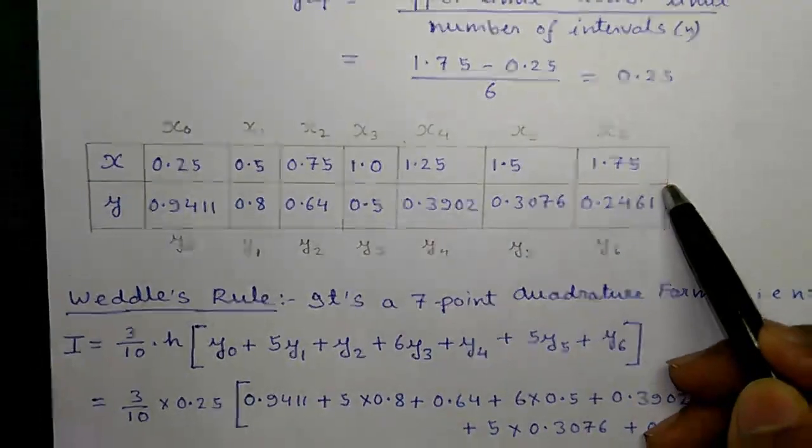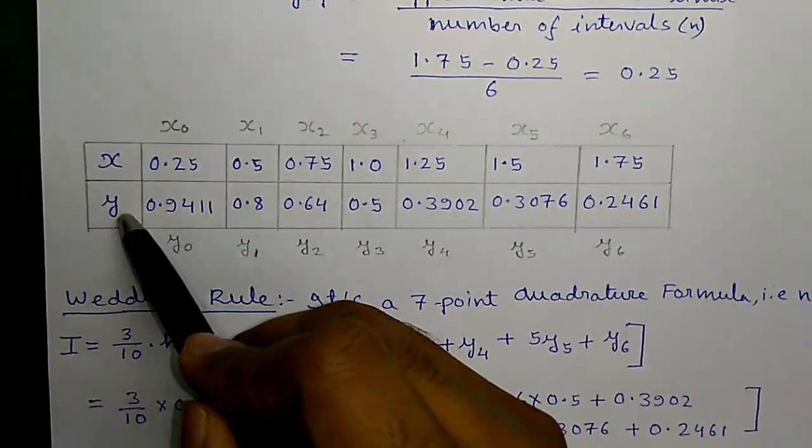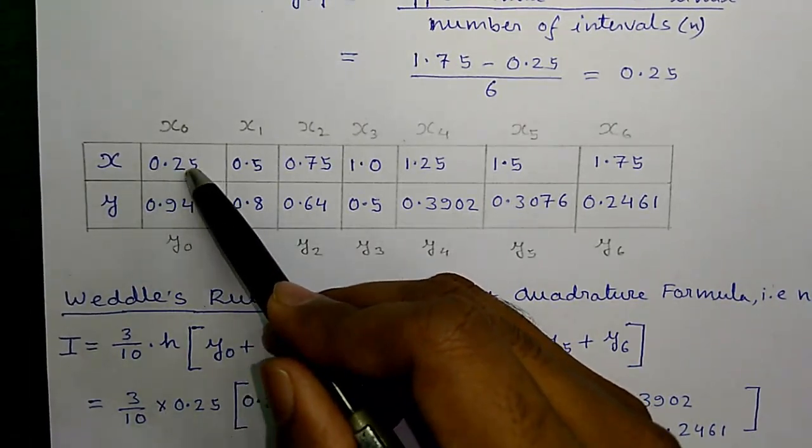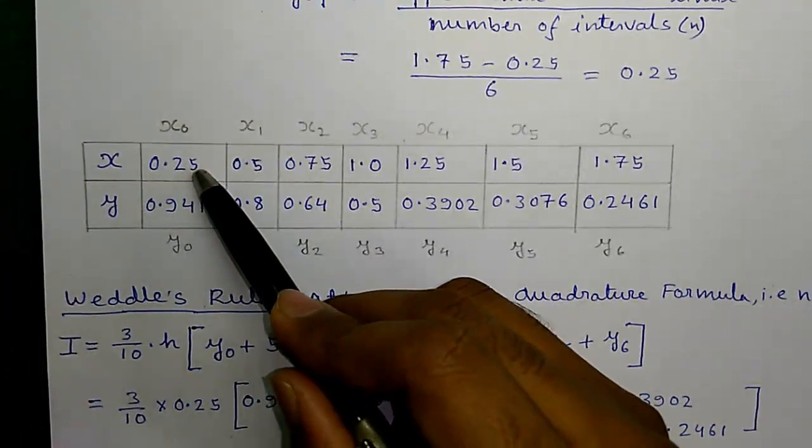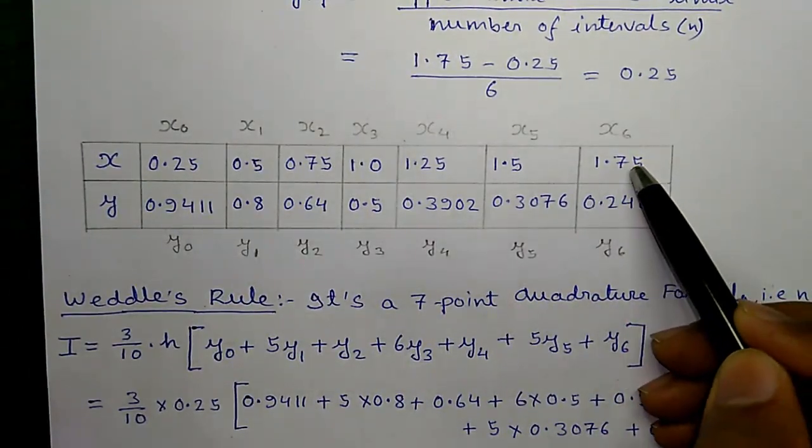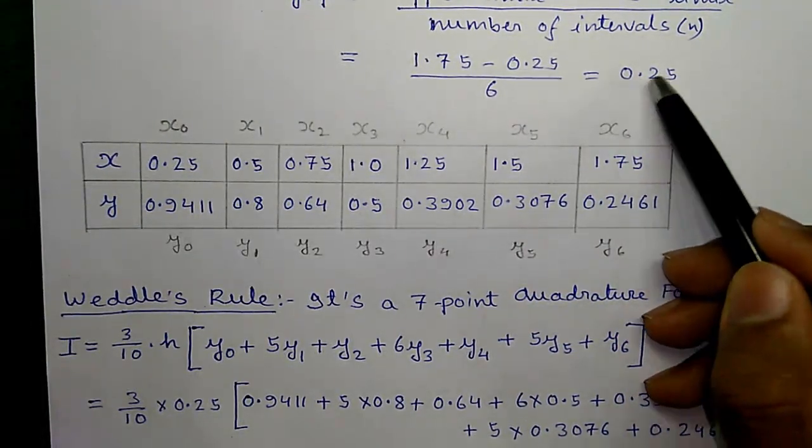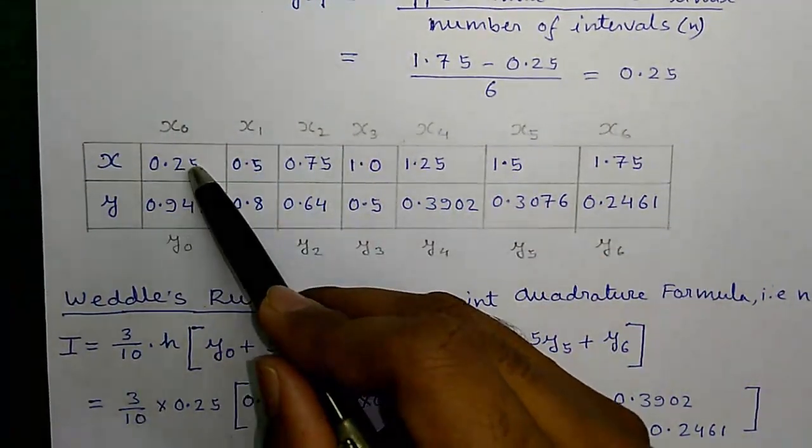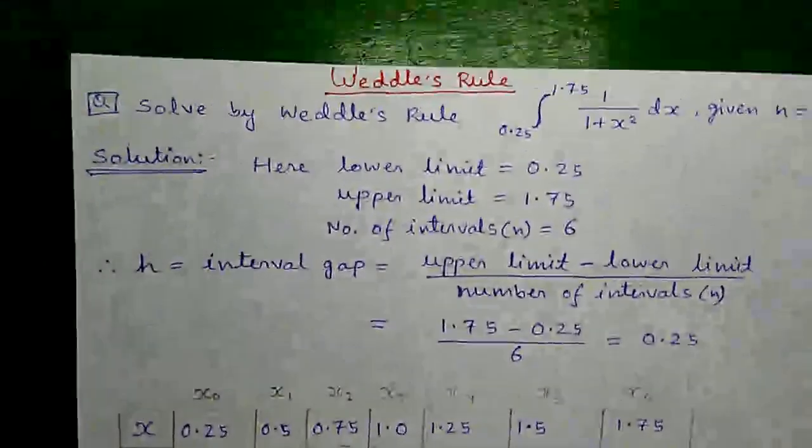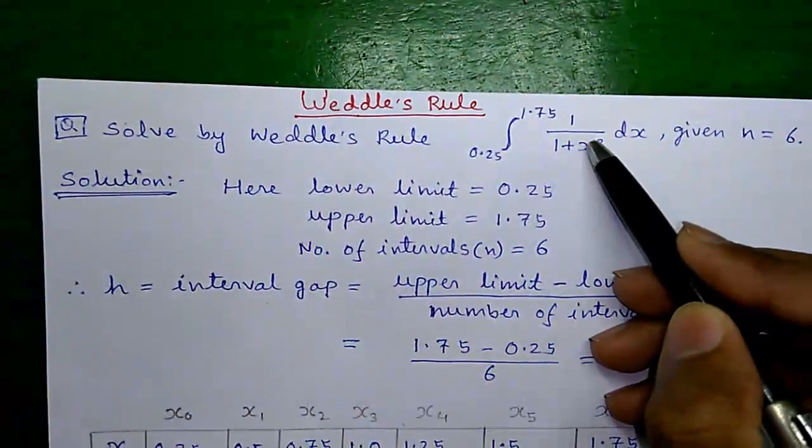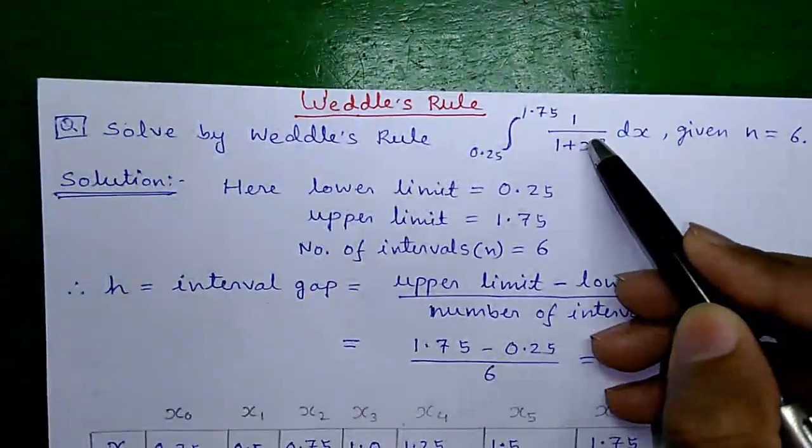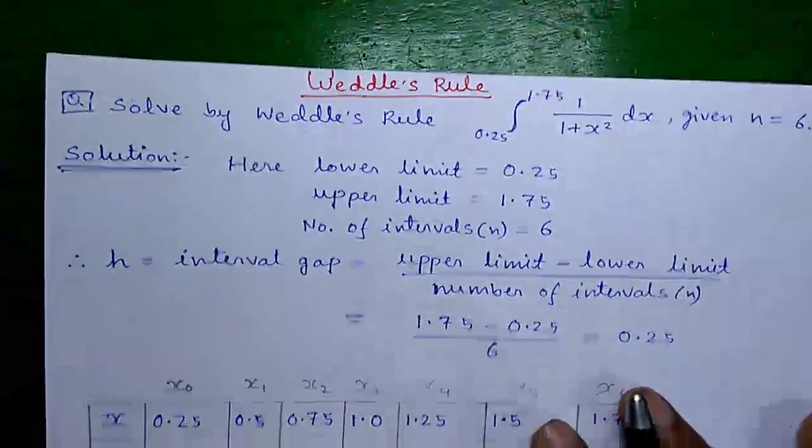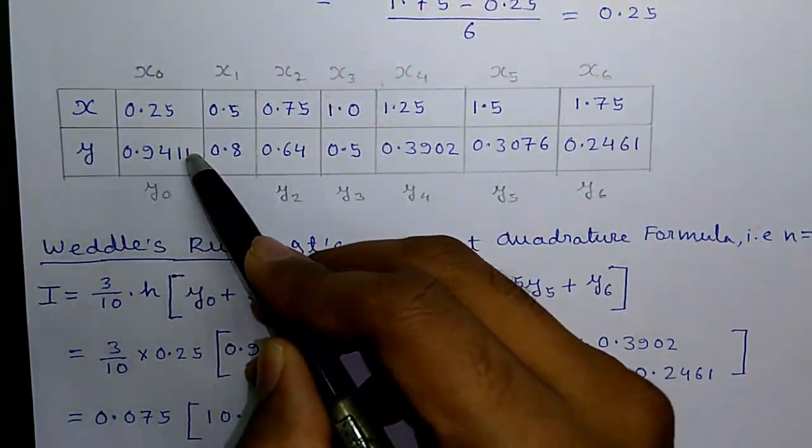Next, we will form this table which is very easy, first write x and y. Next, we will put the values of x starting from the lower limit that is 0.25 and we will end at the upper limit that is 1.75 with the increment of 0.25 which is our interval gap or h. So, let's start. First value of x is 0.25. Now, if we put x equals to 0.25 in this expression value of y will be given by 0.9411.